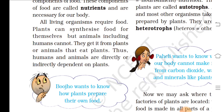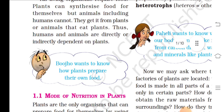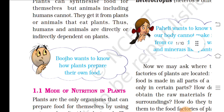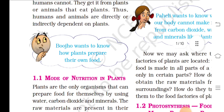All living organisms require food. Plants can synthesize food for themselves, but animals including humans cannot — they get it from plants or animals that eat plants. Thus, humans and animals are directly or indirectly dependent on plants.